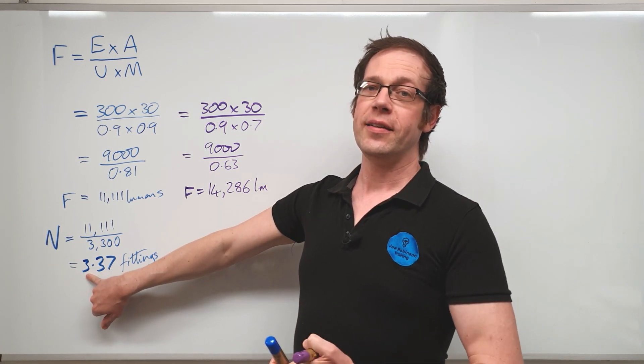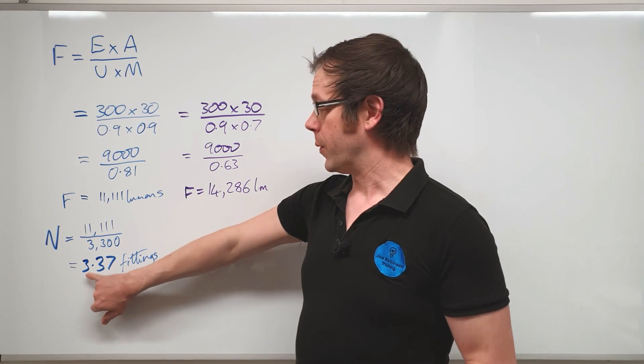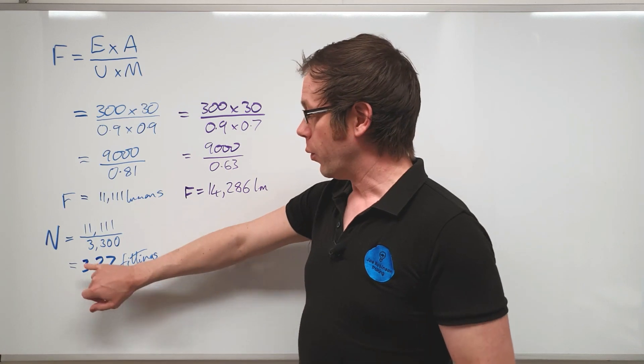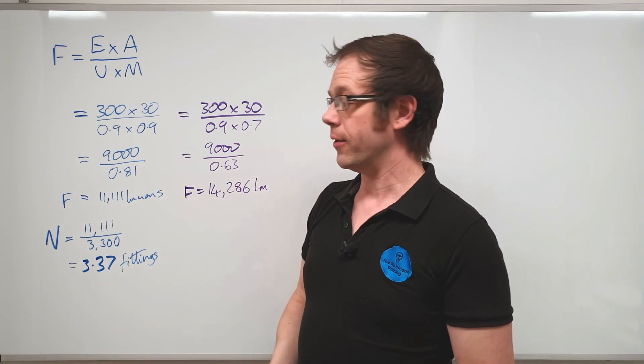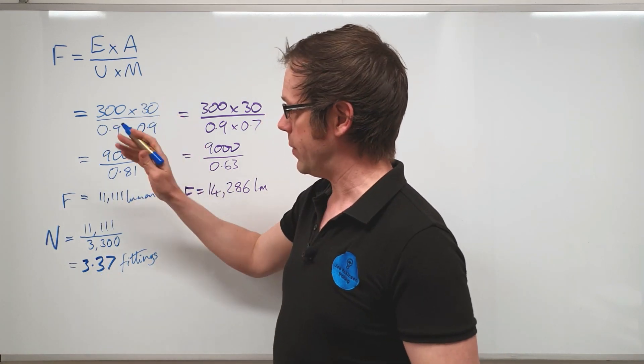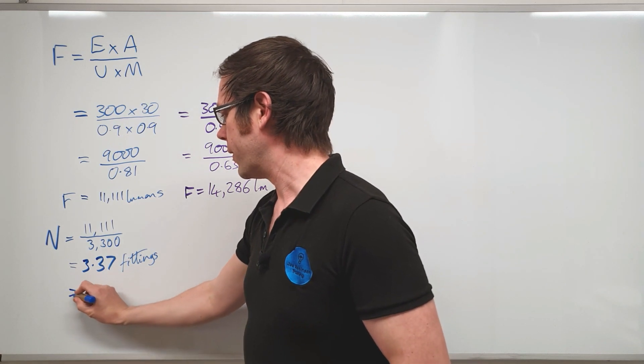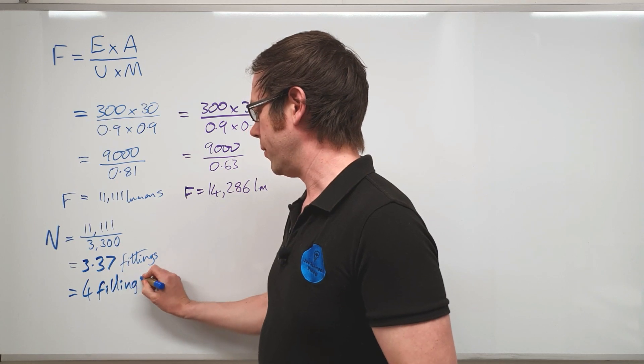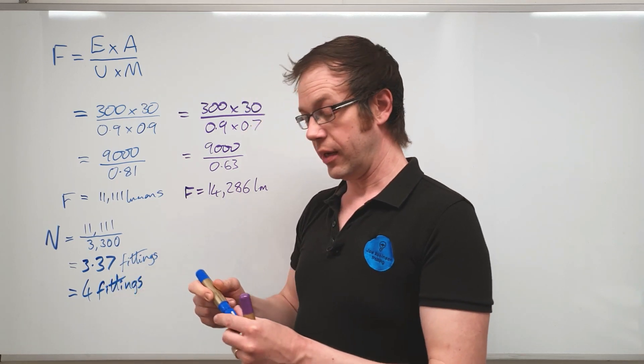But obviously if we only select three fittings for this space we're not going to have enough luminous flux for that area. So we always have to round this up to the next value. So that means that for this particular requirement we're going to need four of those Collingwood fittings installed into that space in order to achieve the correct illuminance level.